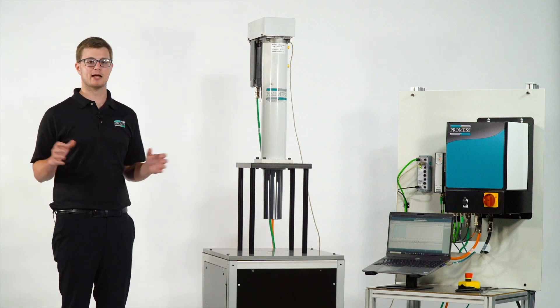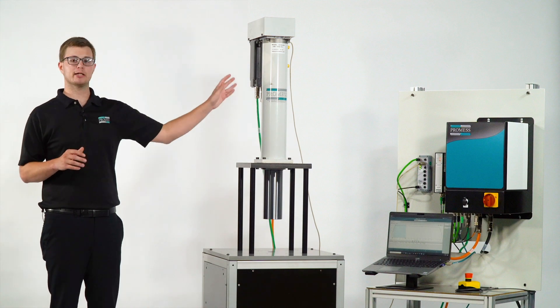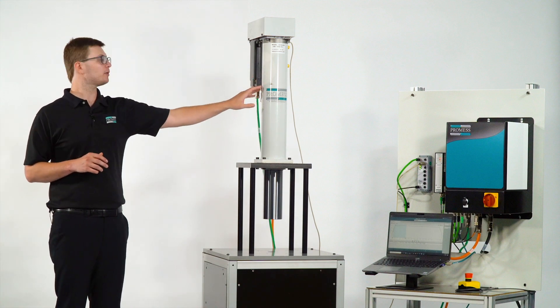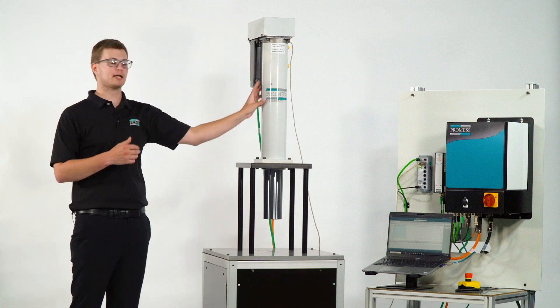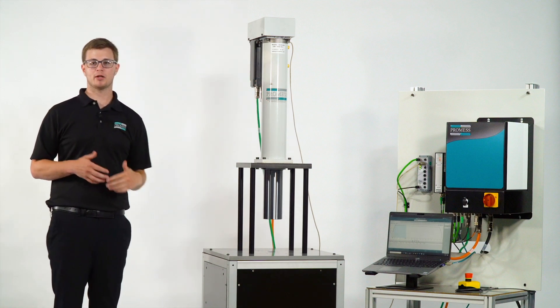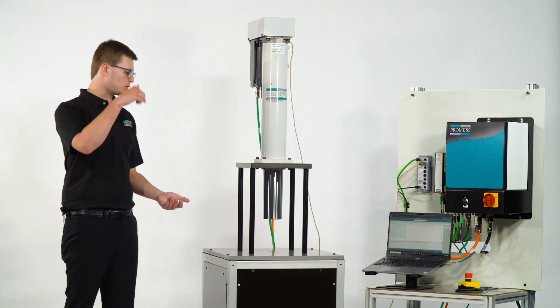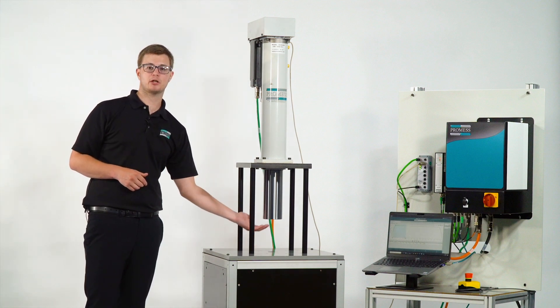Regardless of the size, all of our systems are completely electric and operate with the torque being transferred from the motor to the ball screw, which is located inside this outer housing. When the ball screw rotates, that motion is converted into linear motion of the press ram.